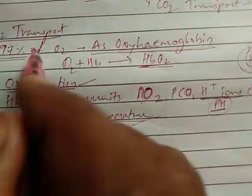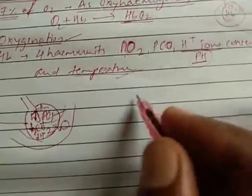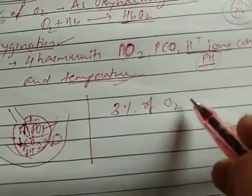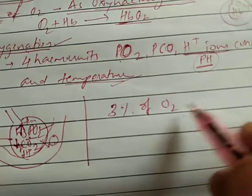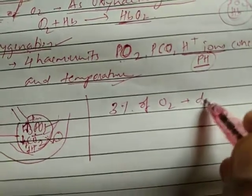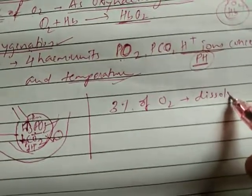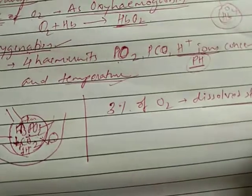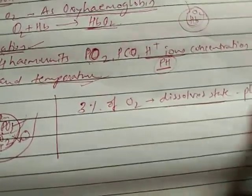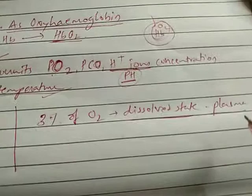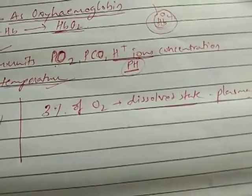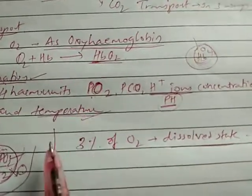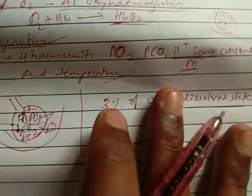97 percent of oxygen is transported as oxyhemoglobin. The remaining 3 percent of oxygen is transported in dissolved state, dissolved in the blood plasma. However, the maximum amount relies on hemoglobin, which is very important for oxygen transport.